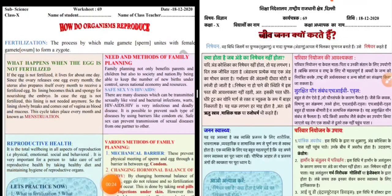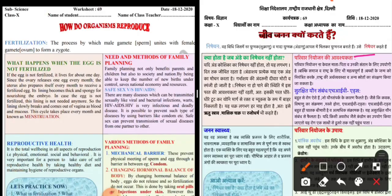First we will talk about fertilization. What is fertilization? The process by which the male gamete — sperm — unites with the female gamete, that is called ovum, to form a zygote. Nishetian vahe vidhi hai jis mein nar yugmak shukranu aur madha yugmak andanu aapas mein milkar yugmanaj banate hai — aur is prakriya ko nishetian kehte hai.